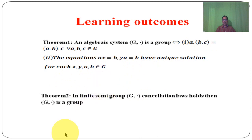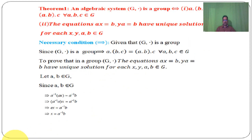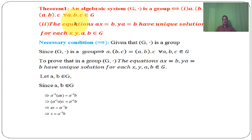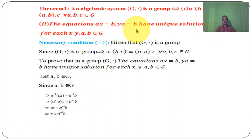Theorem 1 restated: An algebraic system G dot is a group if and only if A dot (B dot C) is equal to (A dot B) dot C for each A, B, C belongs to G, and the equations AX equal to B and YA equal to B have a unique solution for each X, Y, A, B belongs to G.